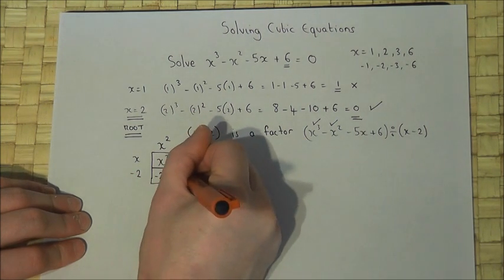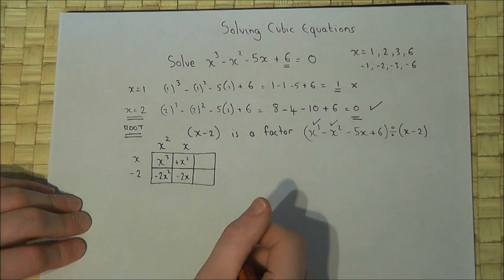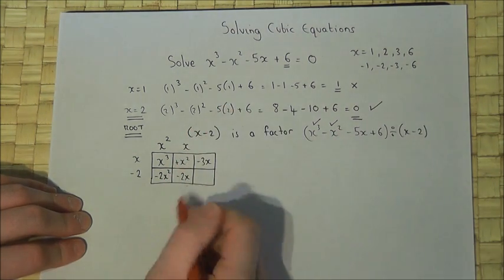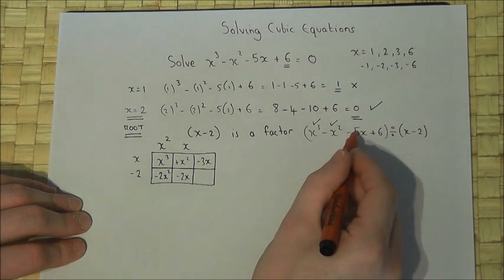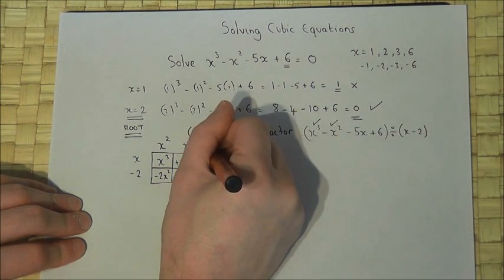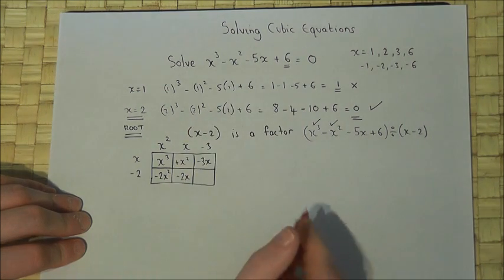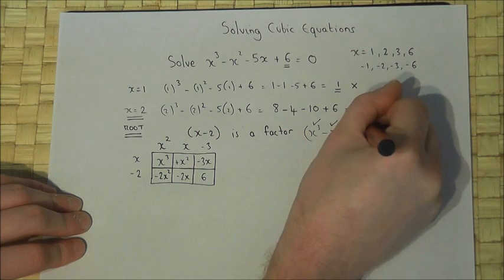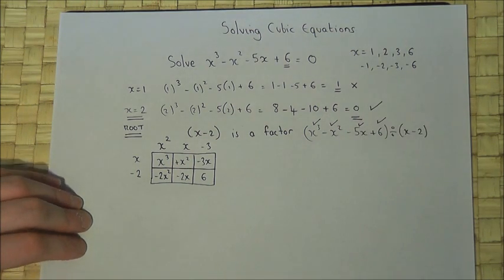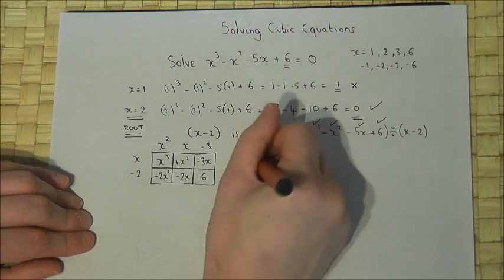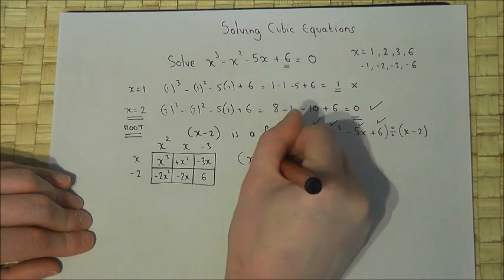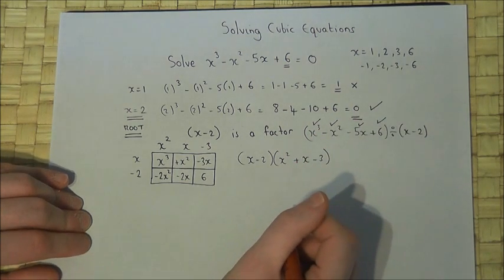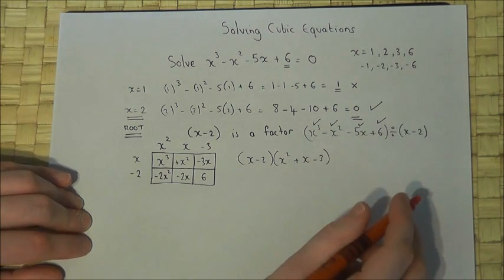An x term already, so x times x is x squared. Minus 2 times x is minus 2x, I need a minus 5x, so I must take away 3x. Minus 2 take 3 is minus 5. It's an x so that's a minus 3, and minus 2 times minus 3 is plus 6. So I've achieved all the terms, so therefore I fully factorise the expression. We get x take 2, x squared plus x take 3. I say fully factorise because I know that does not factorise any further.